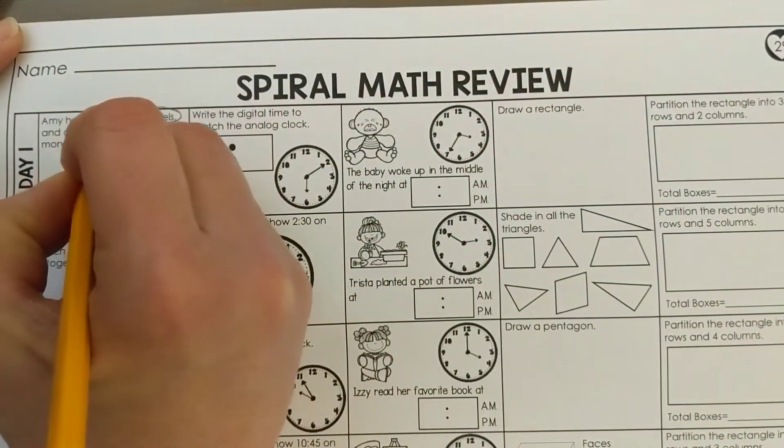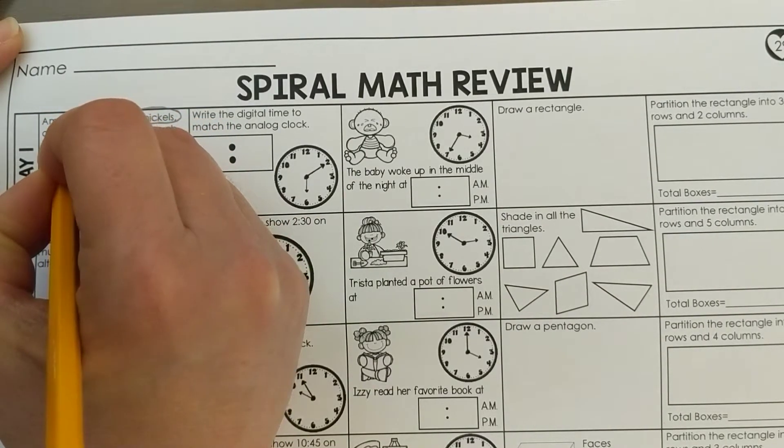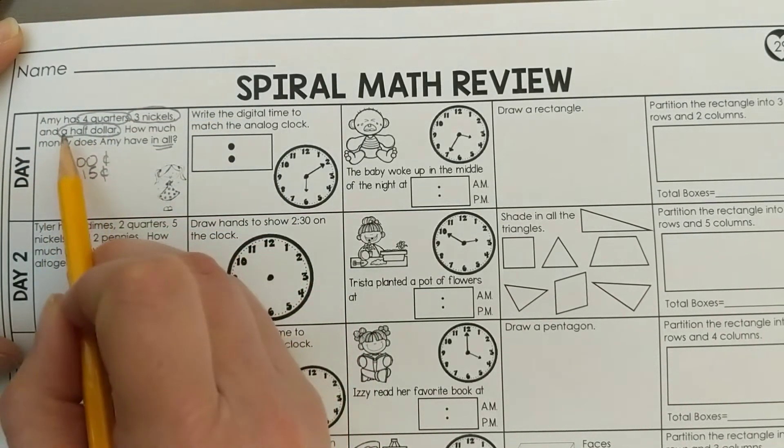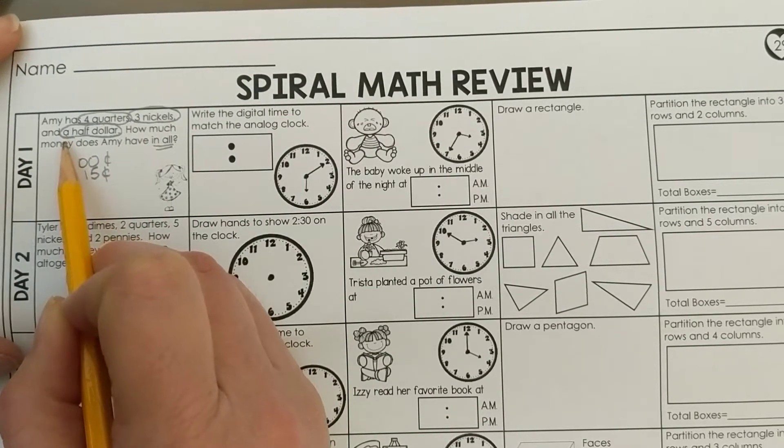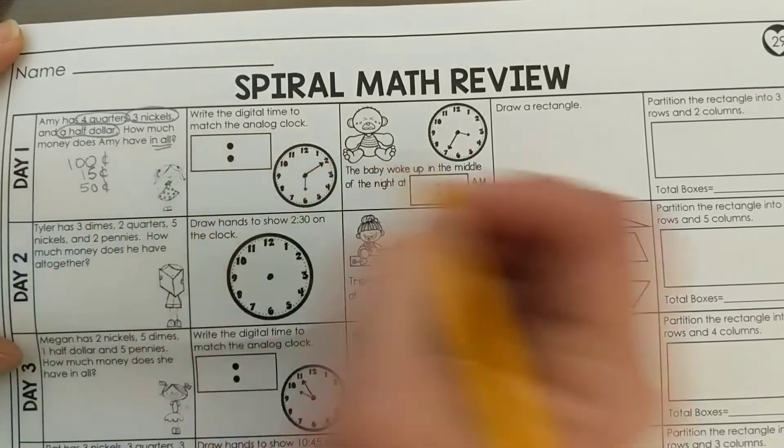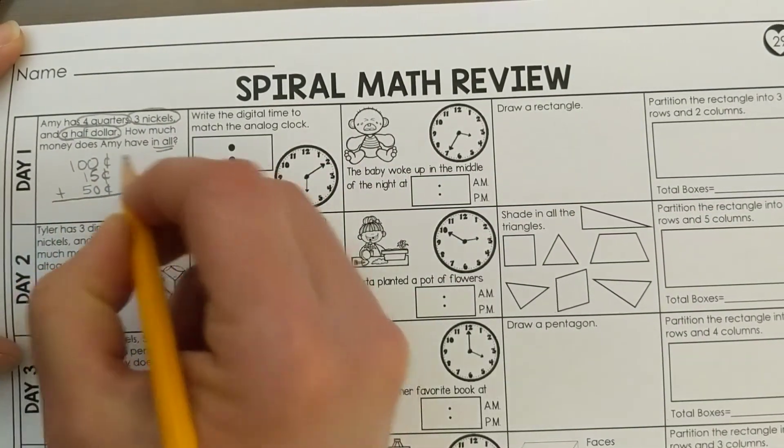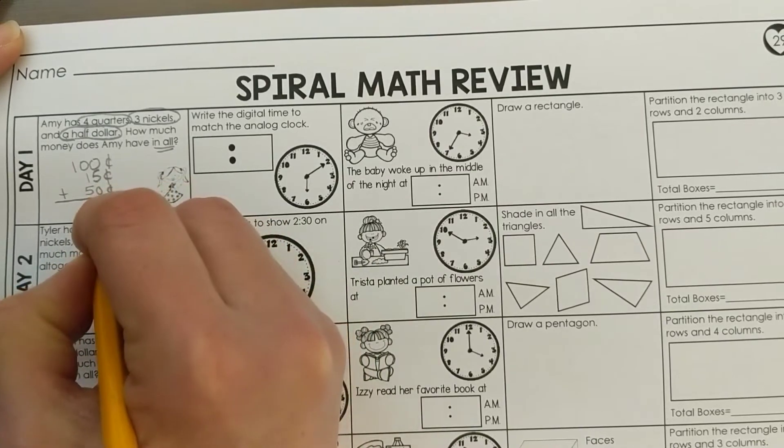A half dollar is 50 cents, and the article in front of it is 'a,' that means I only have one half dollar, so 50 cents. Now I can add them all together. My ones place, I get a 5.